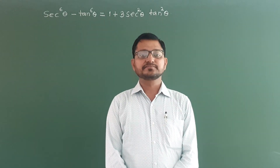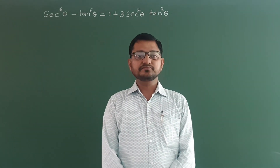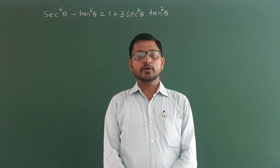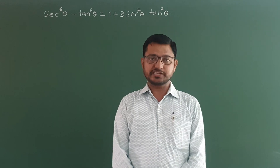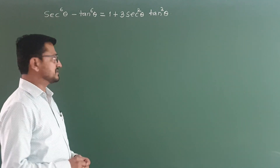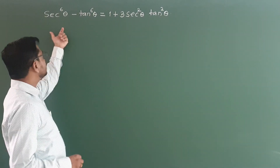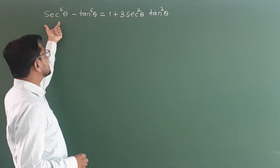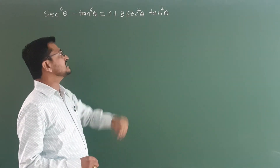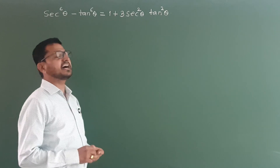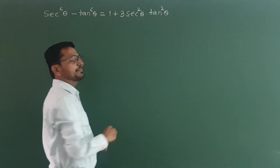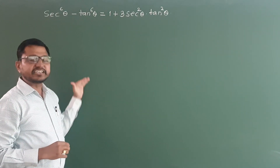Hello friends. Assume a trigonometry problem set may say — which important examples that may vary. See one of the important examples from trigonometry problem set: show that, prove that sec raise to 6 theta minus tan raise to 6 theta is equal to 1 plus 3 sec square theta into tan square theta. This example is simple but has some difficulty level.